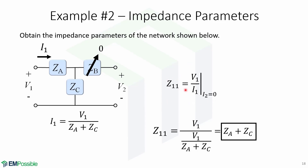We will first obtain Z11, which is equal to V1 over I1 when I2 equals 0. This means that port 2 is going to be open, so no current flows through ZB. We need to write I1 in terms of V1, ZA, and ZZ. I1 is equal to V1 over the sum of ZA and ZZ. Substituting into the expression and simplifying gives us Z11 equals ZA plus ZZ.